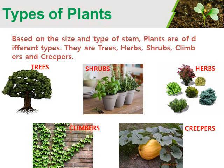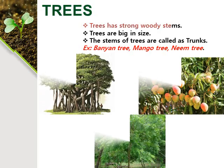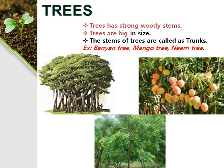Trees: Some plants are big and tall. They have strong and woody stems called trunks. Such plants are called trees. For example, banyan tree, neem tree and mango tree.